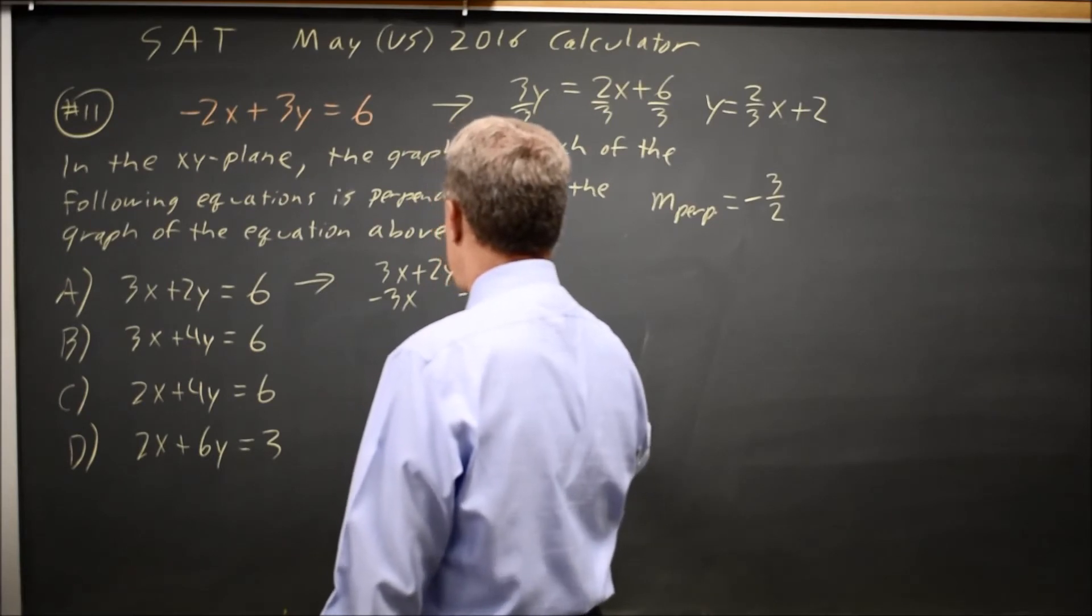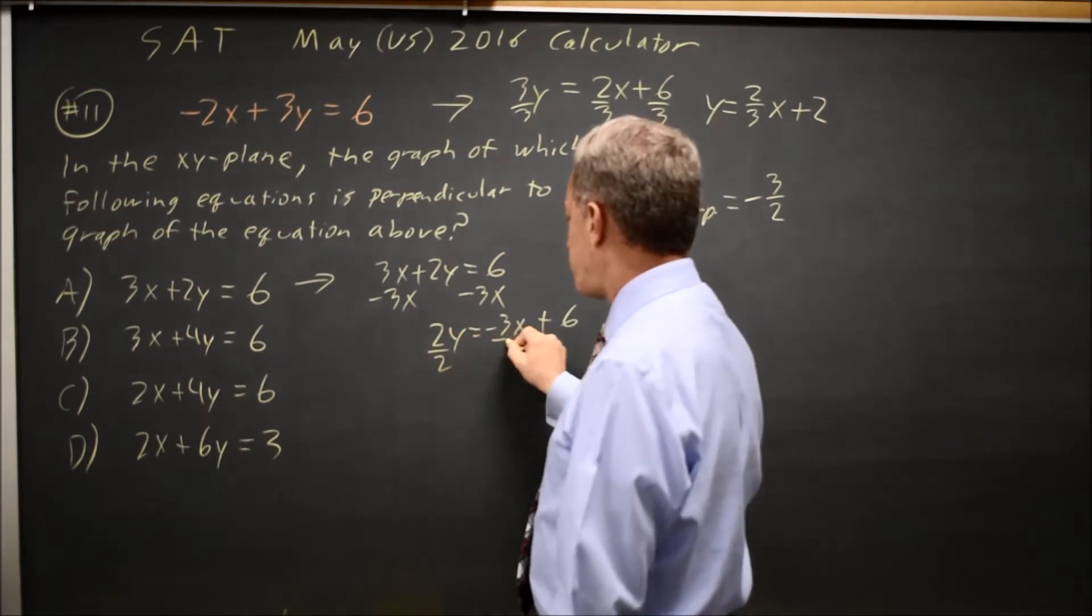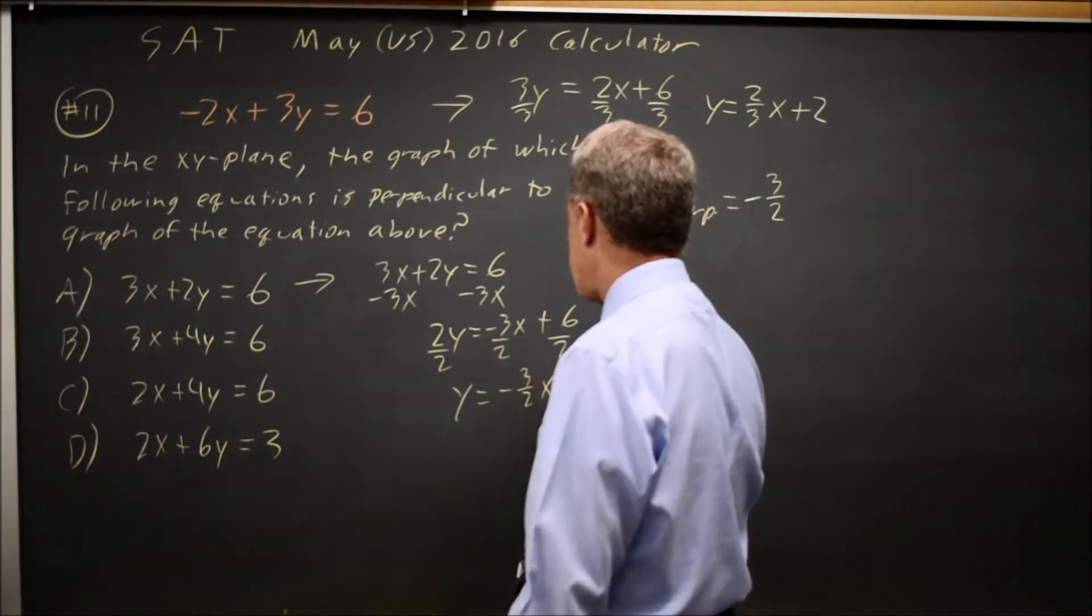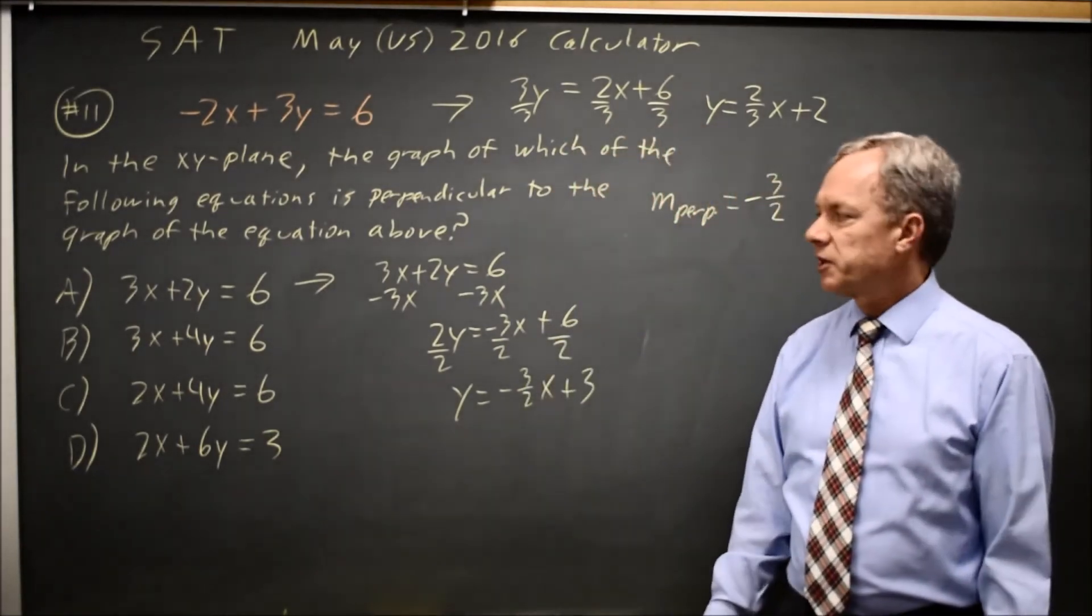2Y equals negative 3X plus 6. I want Y by itself, or slope-intercept, so divide by 2. Y equals negative 3/2 X plus 6/2, which is 3. That matches, so choice A is the correct answer.